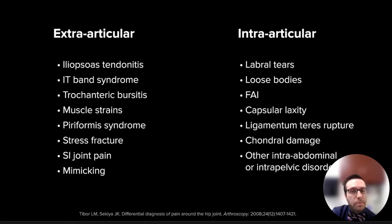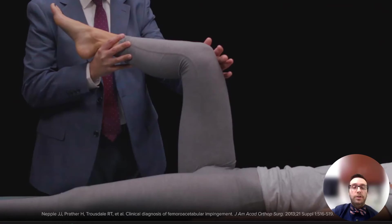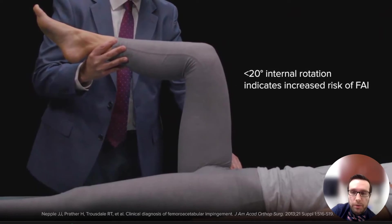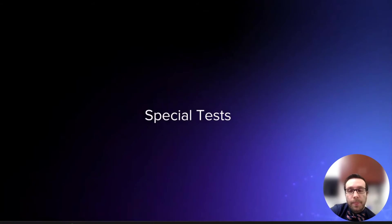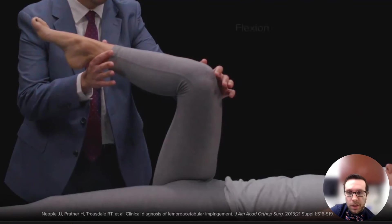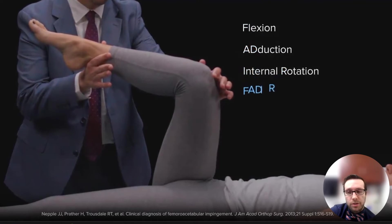Since physical examination is sensitive but not very specific for FAI, we need to focus on determining whether the pain is coming from the hip itself or is due to extra-articular pathology. Full range of motion should always be examined, paying particular attention to flexion and internal rotation. Restricted internal rotation with hip flexion is very indicative of a higher risk for femoroacetabular impingement. Our most reliable special test is the impingement test, or FADIR — flexion, adduction, and internal rotation — and it is our go-to for anterior impingement. A positive test is when we can reproduce the patient's symptoms.